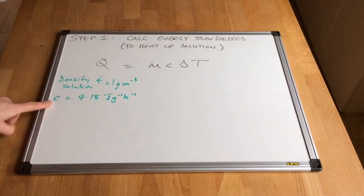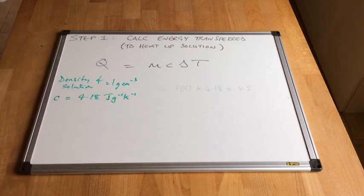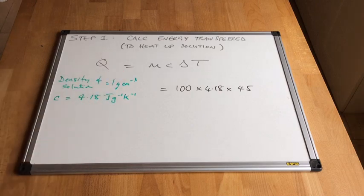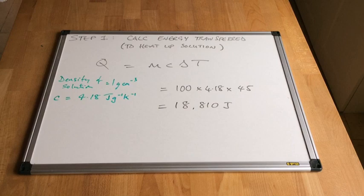The density of the solution is 1 gram per cubic centimetre, and the specific heat capacity is 4.18 joules per gram per degree Kelvin. Feeding those numbers into the mcΔT equation: 100 cm³ is equivalent to 100 grams, so M = 100, C = 4.18, and the temperature rise was 45 degrees C. That gives us an energy transfer of 18,810 joules — this reaction has transferred that many joules into the solution, heating it up by 45°C.